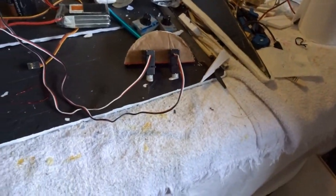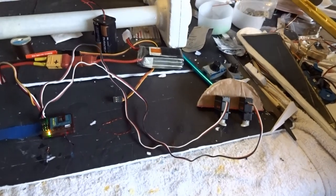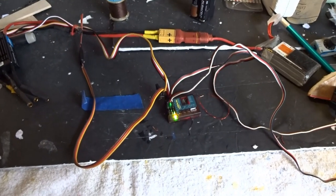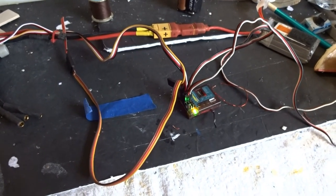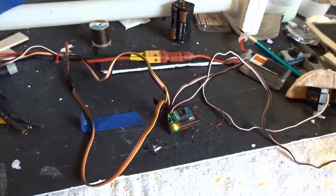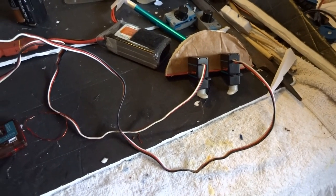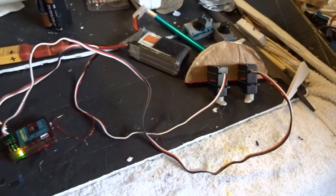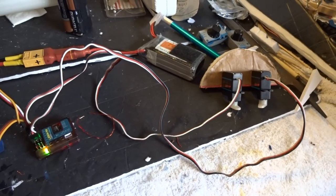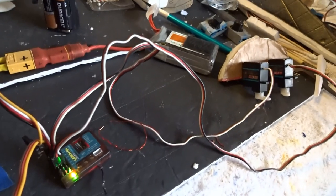Okay, I just bound this Lemon 7-channel receiver. When I use the elevator, you can see it's this one moving. There's the aileron. It's a dual aileron setup with the flap.